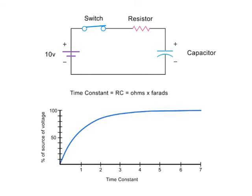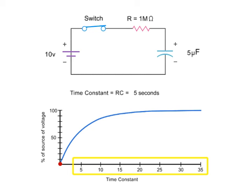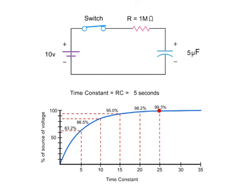For example, in this circuit, if you have a 1 megaohm resistor and 5 microfarads capacitor, the time constant would be 5 seconds. Therefore, for each 5 seconds of elapsed time, the capacitor will achieve its corresponding voltage percentage until it reaches an effective charge after five time constants.